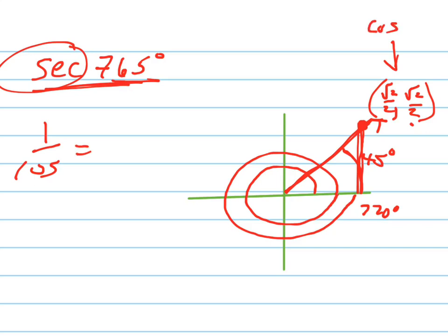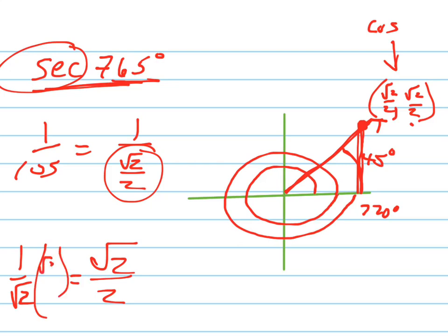So 1 over the cosine is 1 over root 2 over 2. Now people always get confused by this. Remember root 2 over 2, we found that because it was 1 over root 2 originally, and we had to simplify it by multiplying it by root 2 over 2. Remember that?